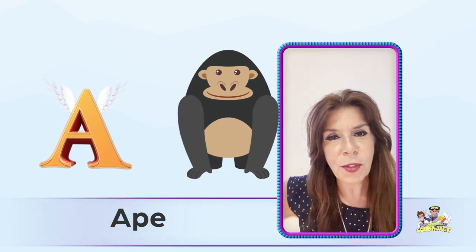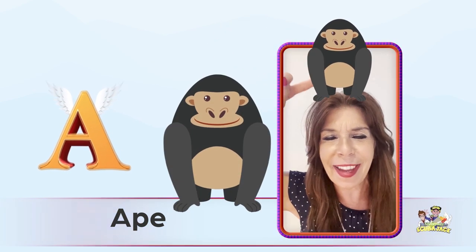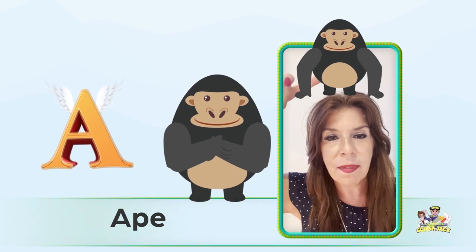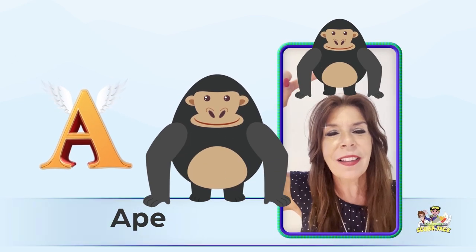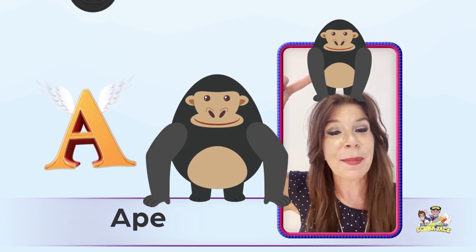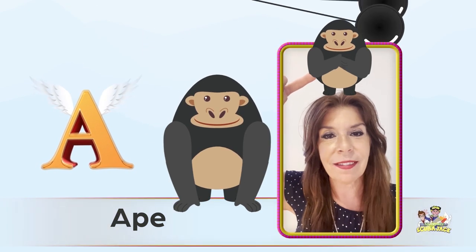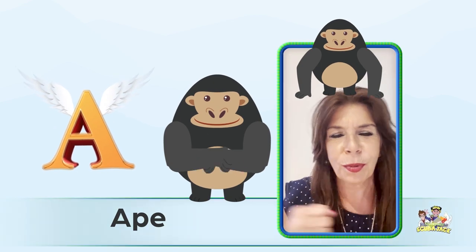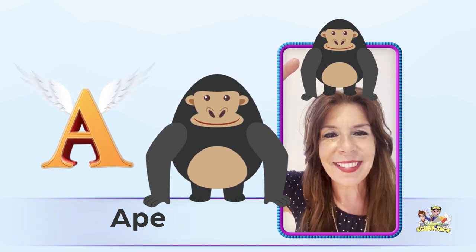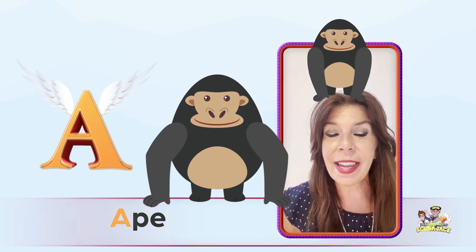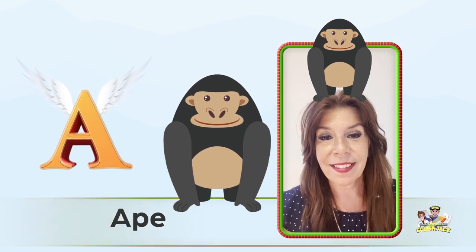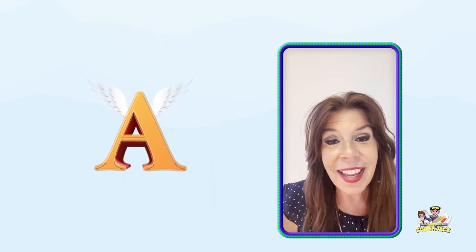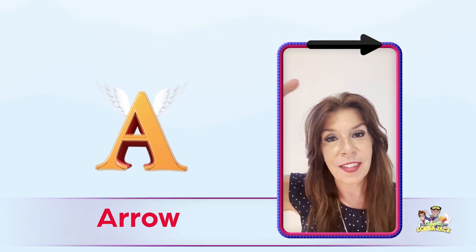The next word is ape. Do you see the ape above my head? Silly ape! Can you say ape? Let's do it one more time — ape. What color is the ape? It's black, that's correct! You're very smart. What does an ape say? Silly Mr. Ape! Let's say ape one more time — ape. Very good!